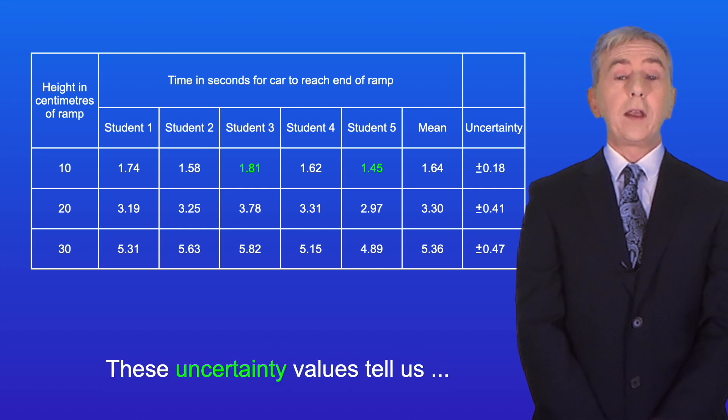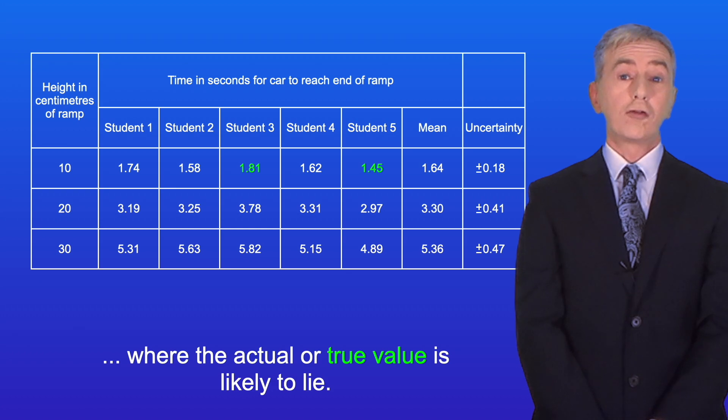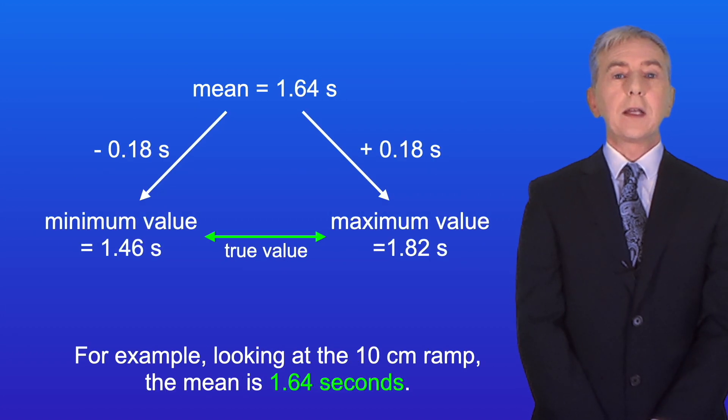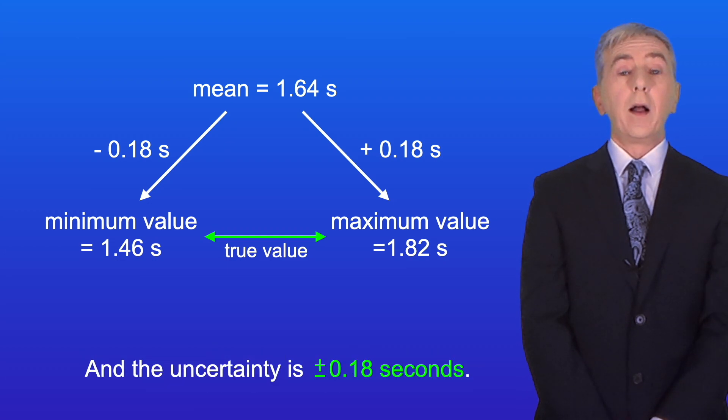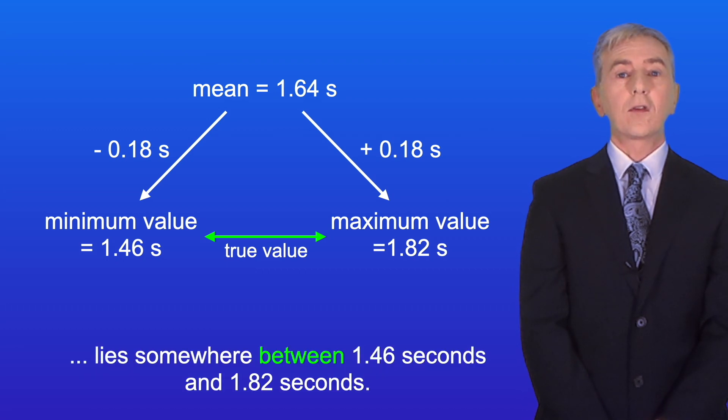Okay now these uncertainty values tell us where the actual or true value is likely to lie. So for example looking at the 10 centimeter ramp the mean is 1.64 seconds and the uncertainty is plus or minus 0.18 seconds. So that means that the true value lies somewhere between 1.46 seconds and 1.82 seconds.